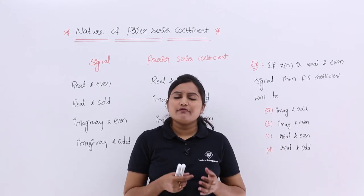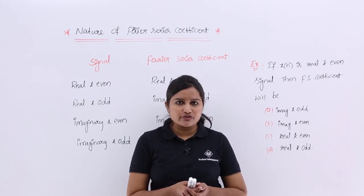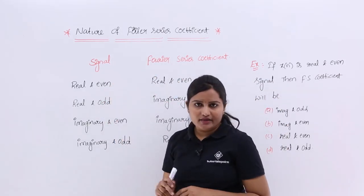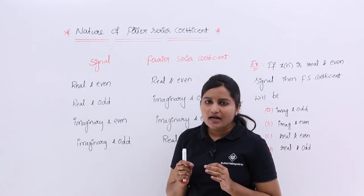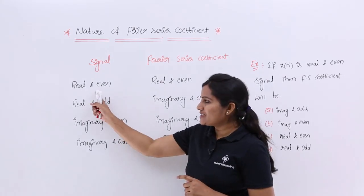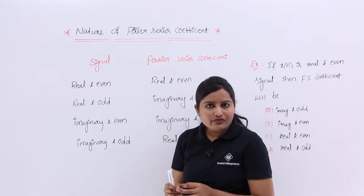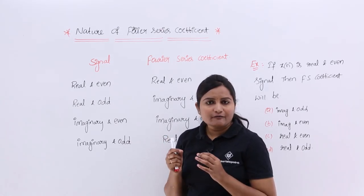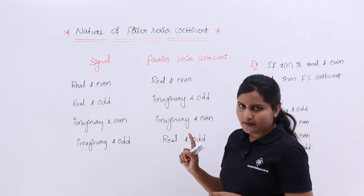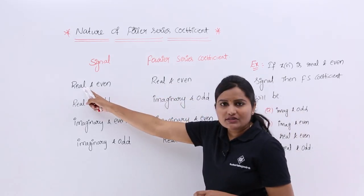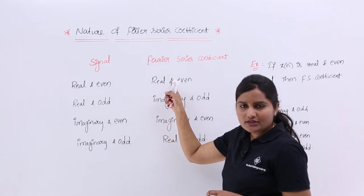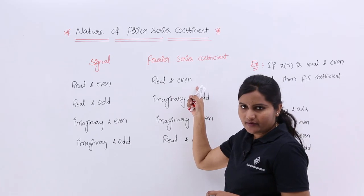The shortcut for the nature of the Fourier series coefficient is here. If the signal that we want to represent in terms of Fourier series representation is real and even, then the coefficient of approximation — the Fourier series coefficient — will also be real and even. When a signal is real and even, its Fourier series coefficient is also real and even.